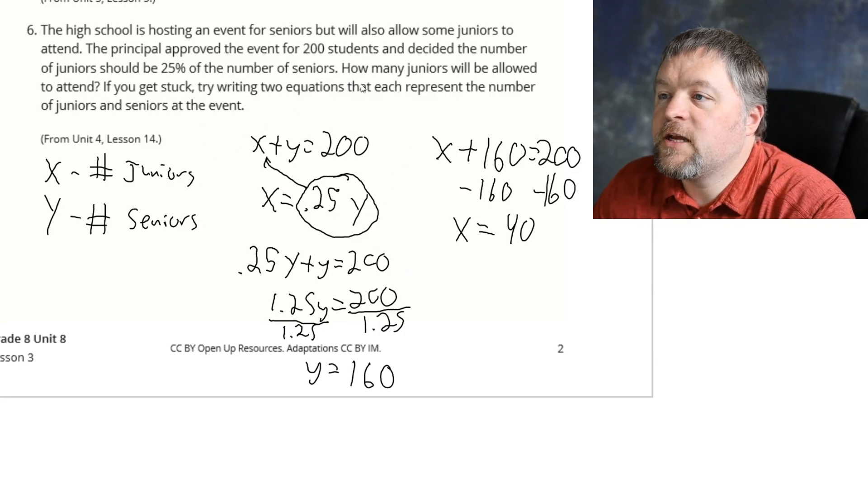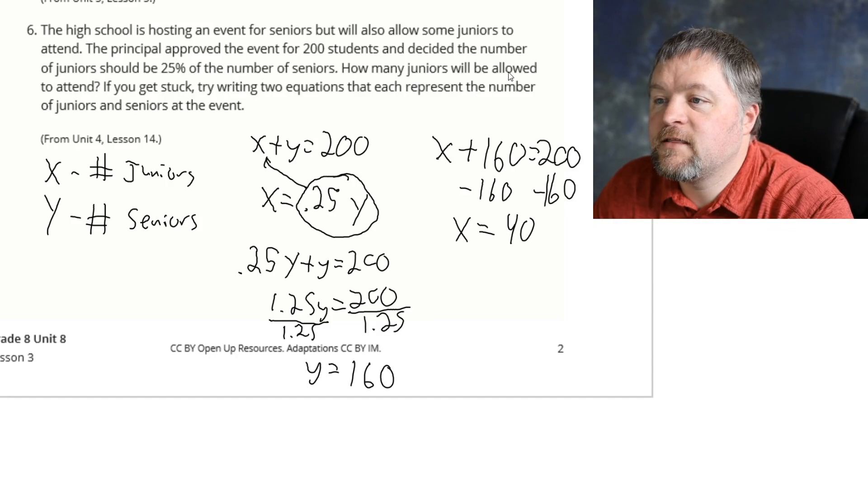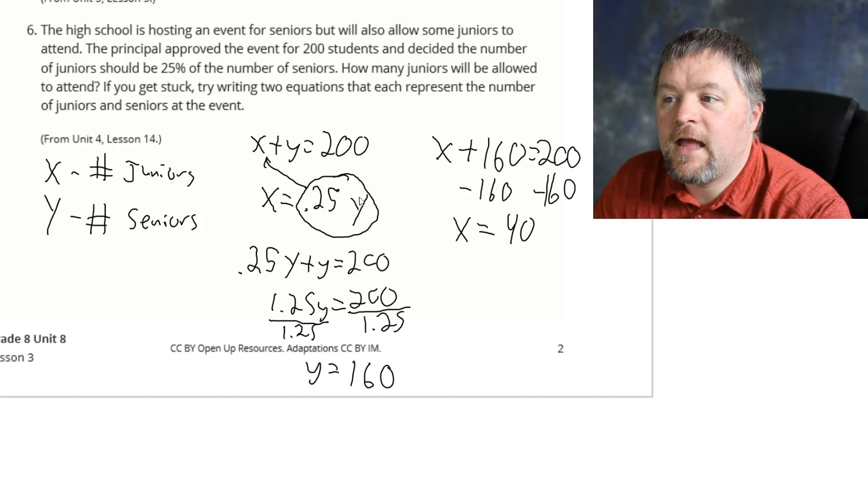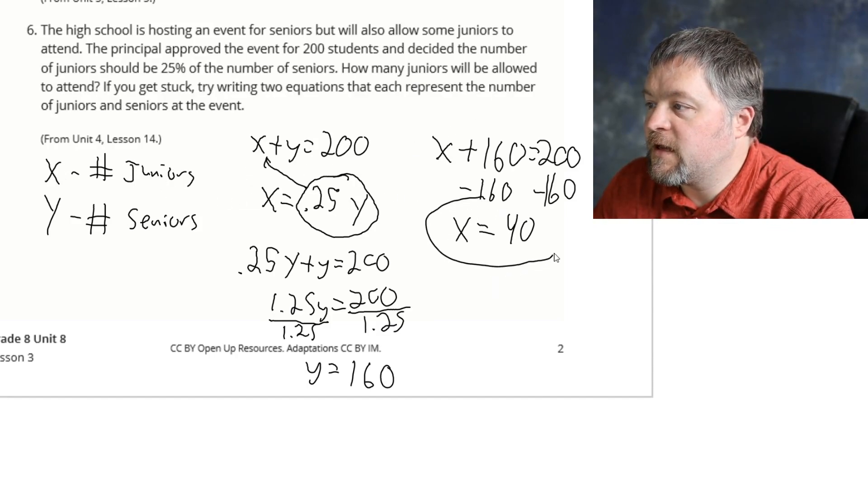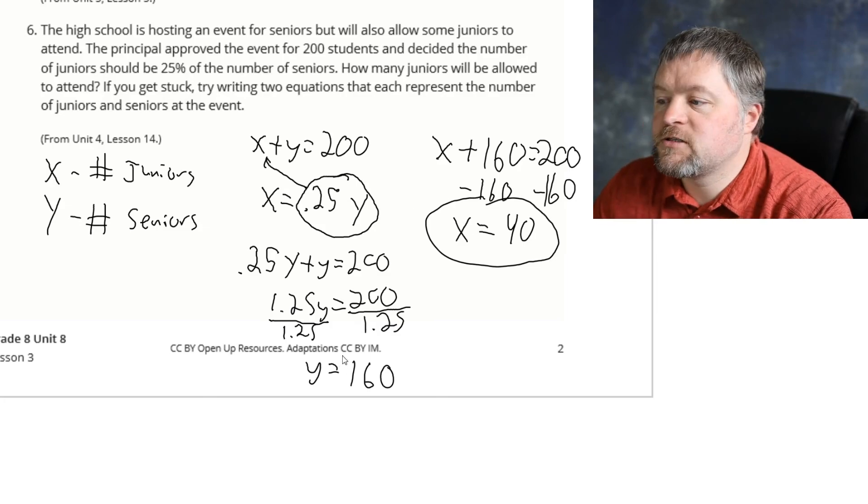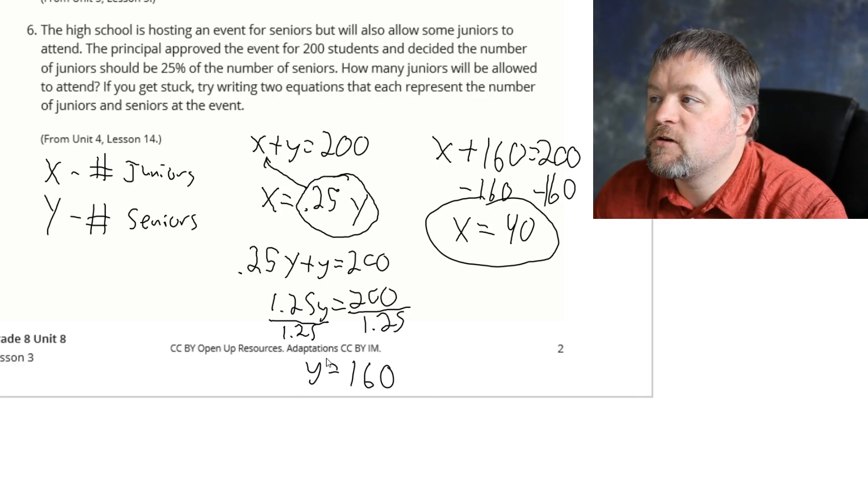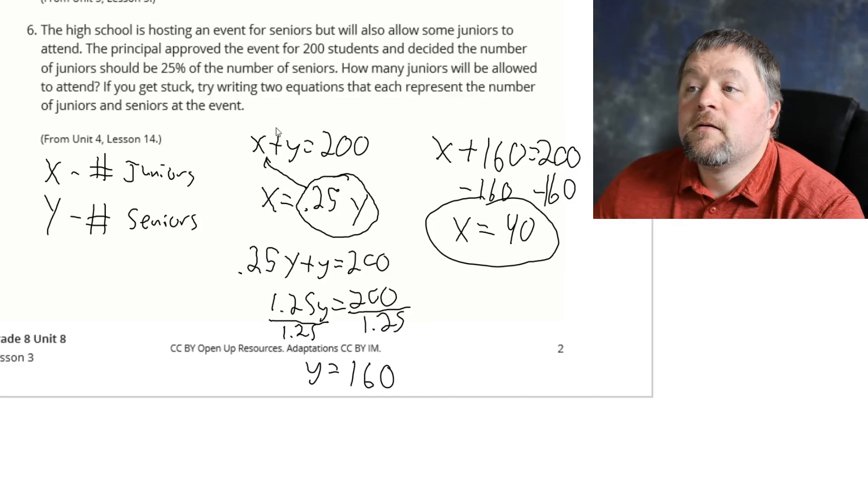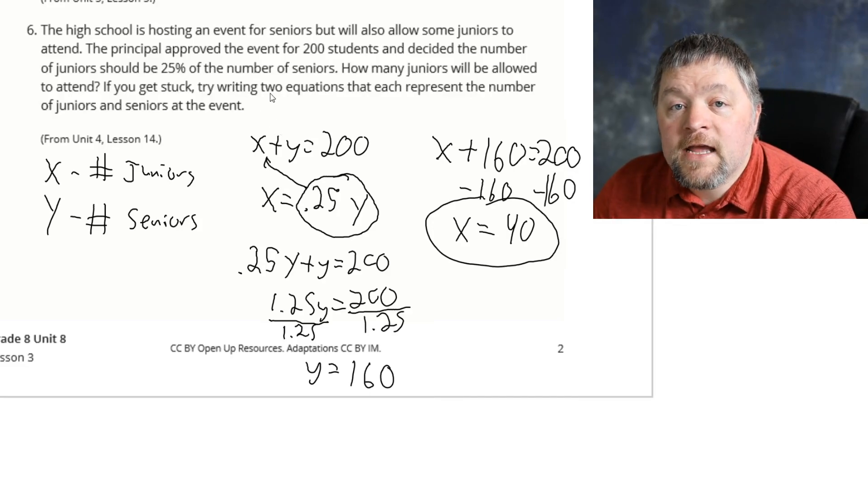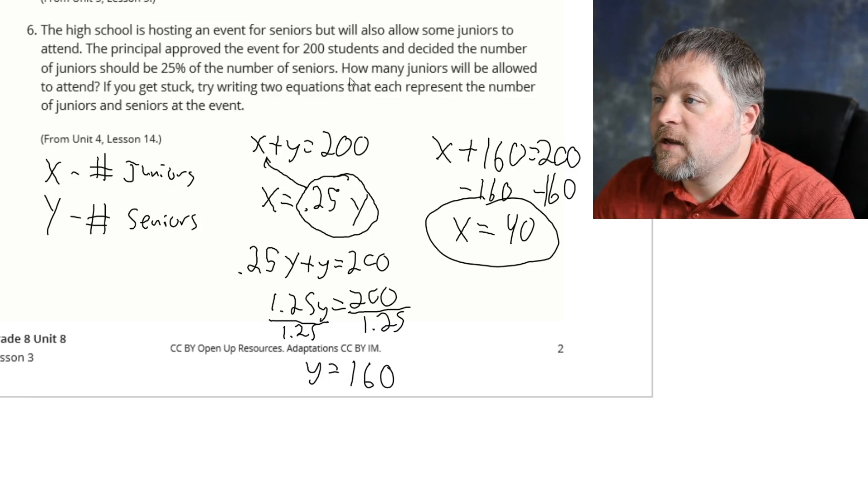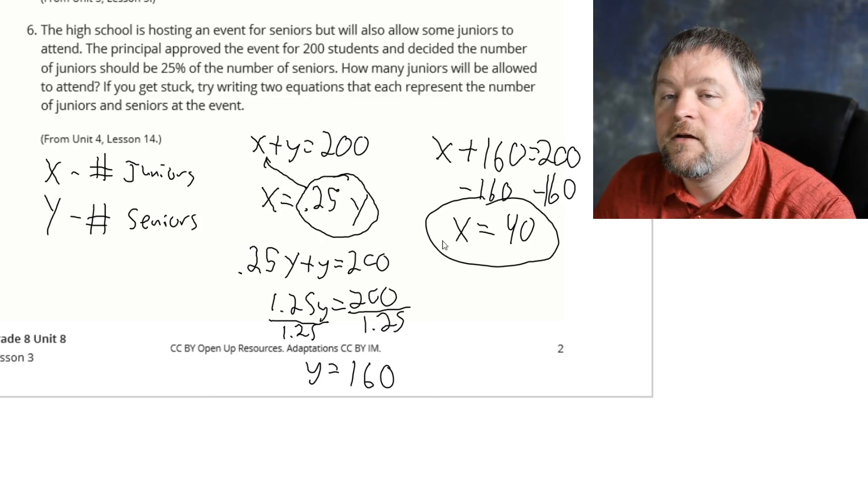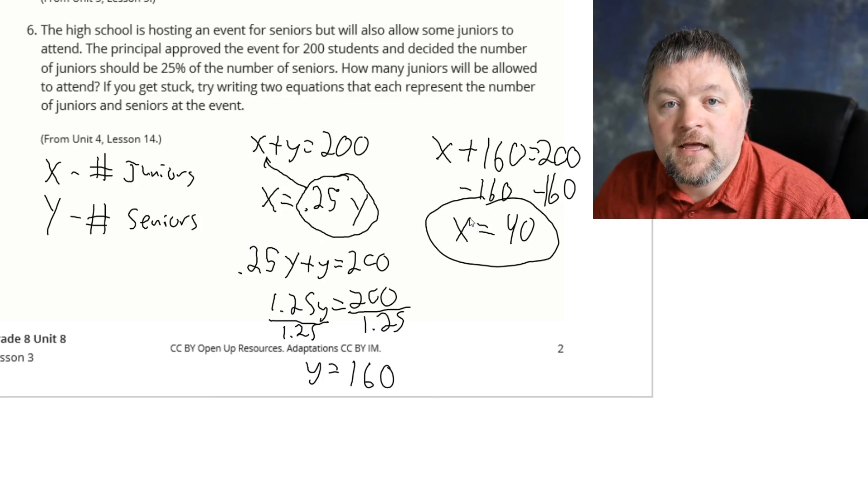So how many juniors will be allowed to attend the event? x is juniors, there will be 40 juniors at the event. There will also be 160 seniors at the event. Make sure you are answering the question that is asked though. The question we are asked is how many juniors will be allowed to attend? There will be 40 juniors allowed to attend the event.